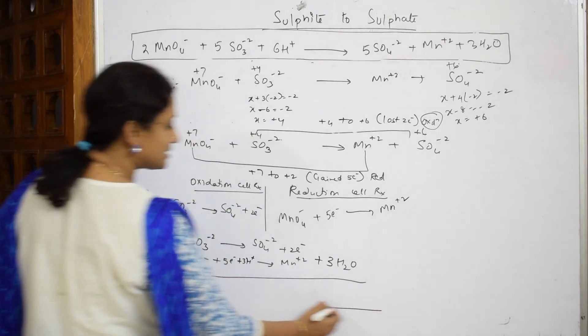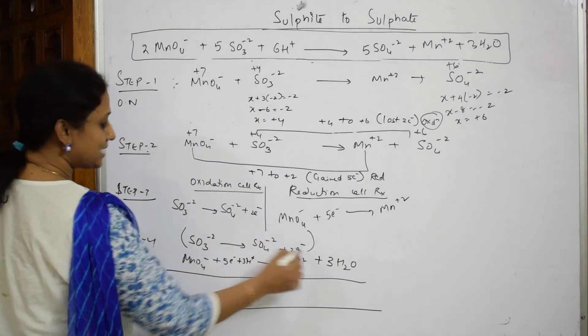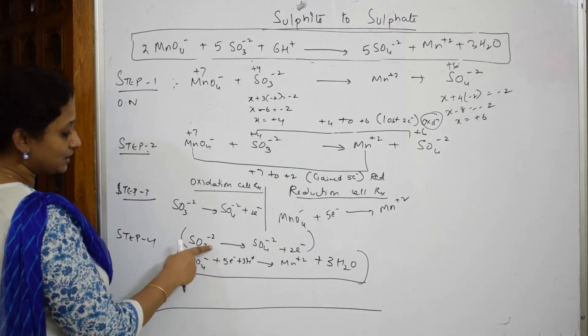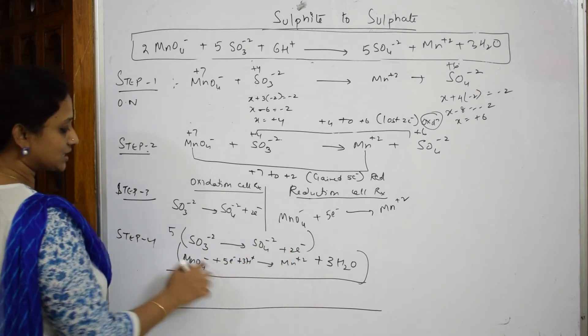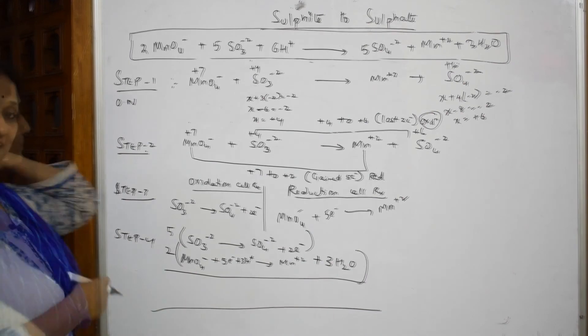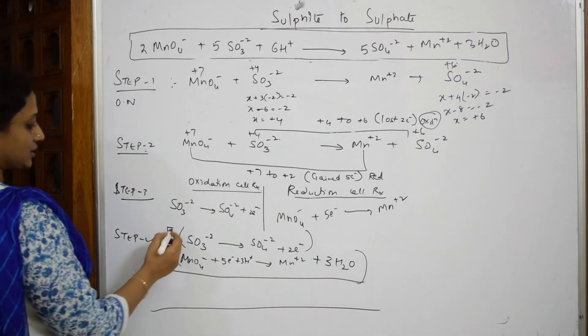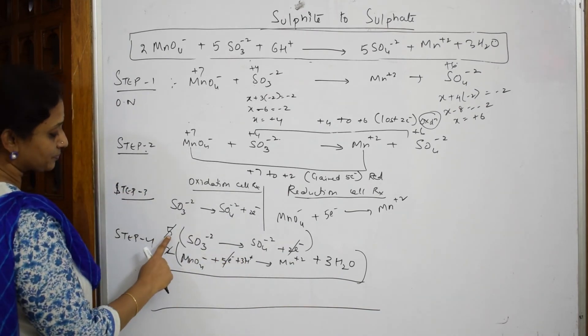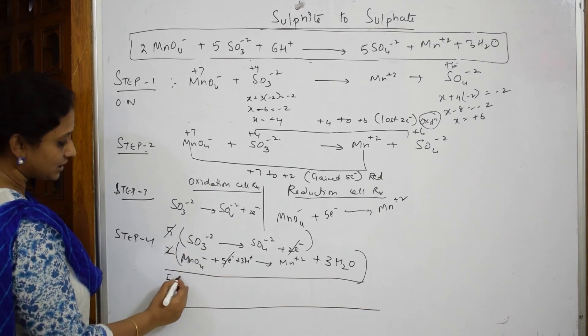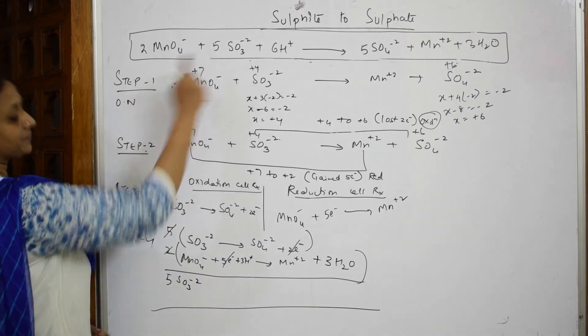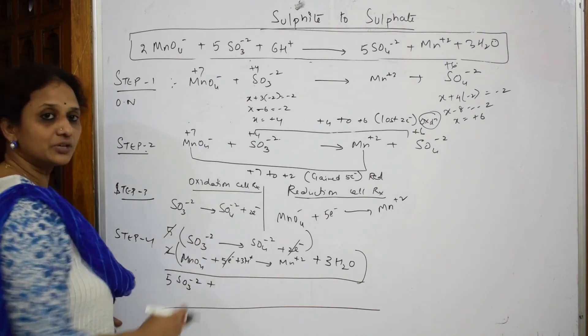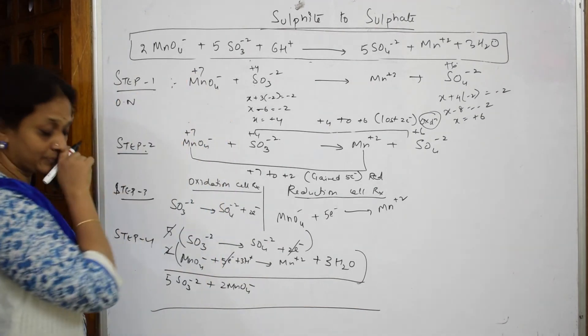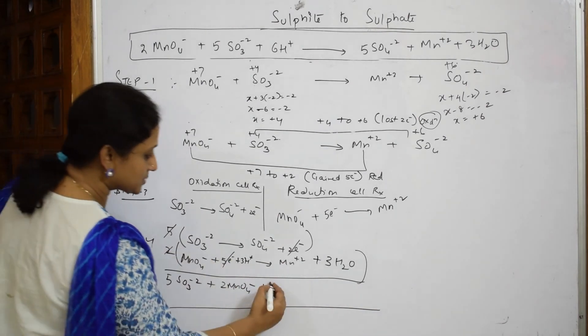Now you are going to cancel the electrons. To cancel the electrons, here there are 5 electrons because I have to get the final reaction. Multiply this reaction with 5, multiply this reaction with 2. Finally cancel all the electrons on the LHS and RHS. Now let us write the final reaction. The first one on the reactant side 5 SO3^2-. Plus on the reactant side, come back to the below reaction. Now manganese is 2 MnO4^-. 3 times 2, 6 protons here.